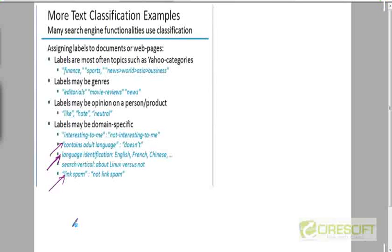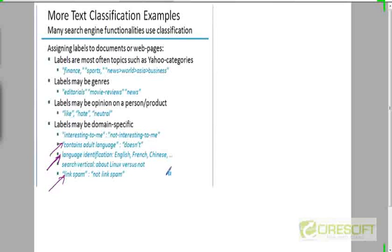Likewise, if you want a content detector to filter documents with adult content or pornography, you'll again have two kinds of classes. This doesn't apply only to text — it can apply to images, movies, and all kinds of content. Outside of web search, you can have scientific data: for example, based on the x-ray image of a particular tumor, you want to classify it as benign or malignant. So classification problems also arise in medicine, where looking at an image you should be able to predict whether it corresponds to a particular medical condition. The classes depend on what problem you want to solve.